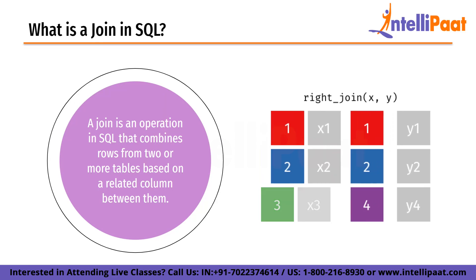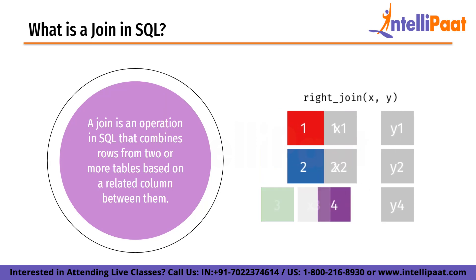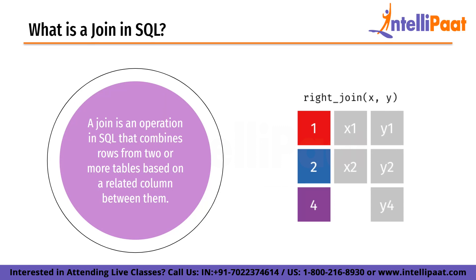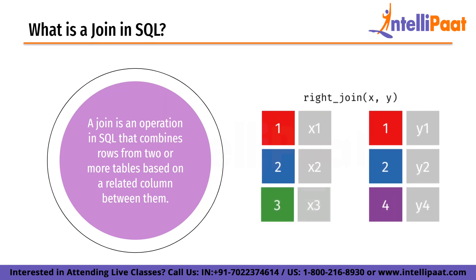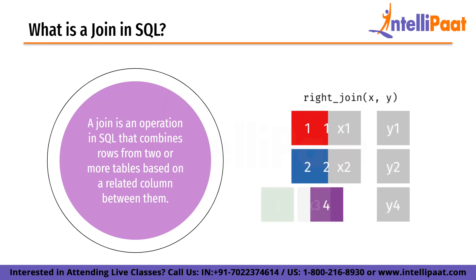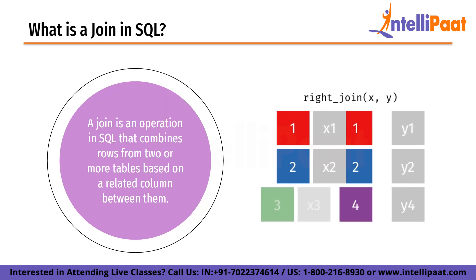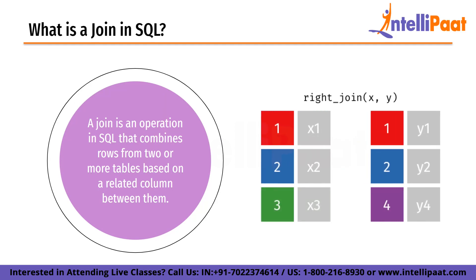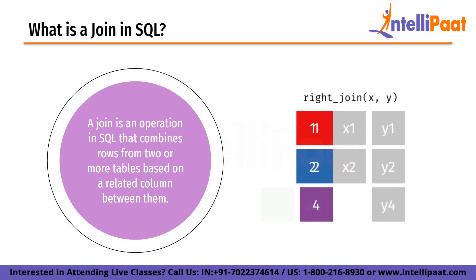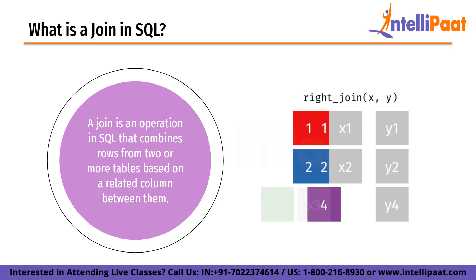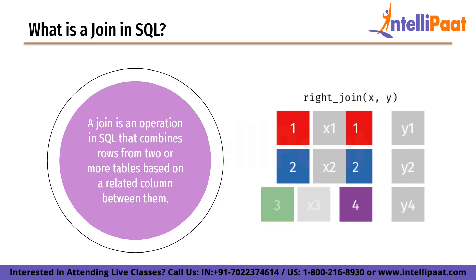The resulting table will include all the information from both tables, but only for the rows where the customer ID matches between the two tables. Joins can be performed using different types, each with its own specific syntax and behavior, but the basic idea is to combine rows from two or more tables based on a common column.